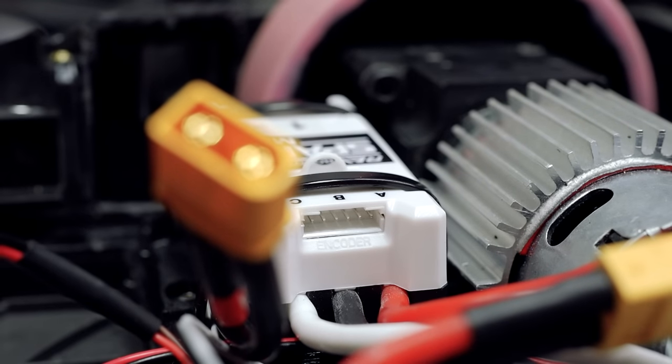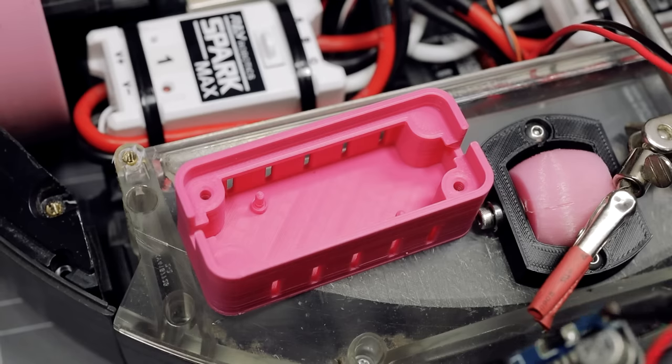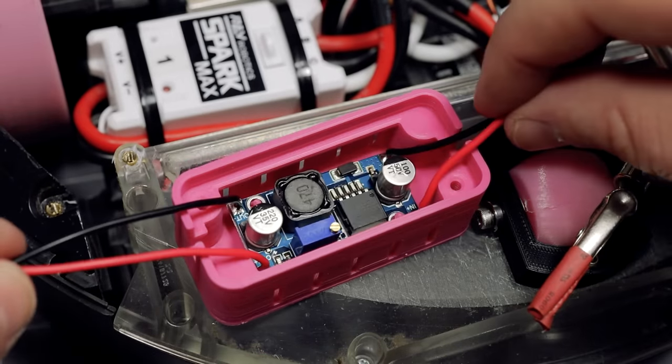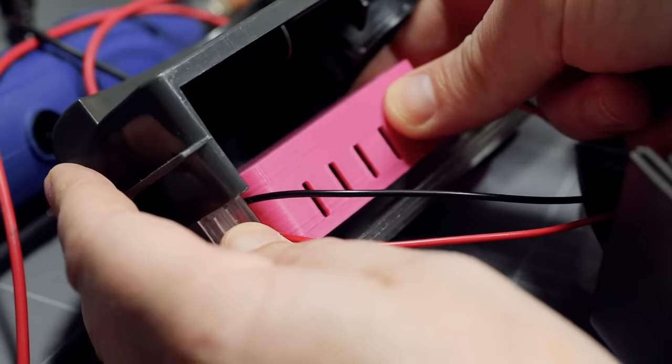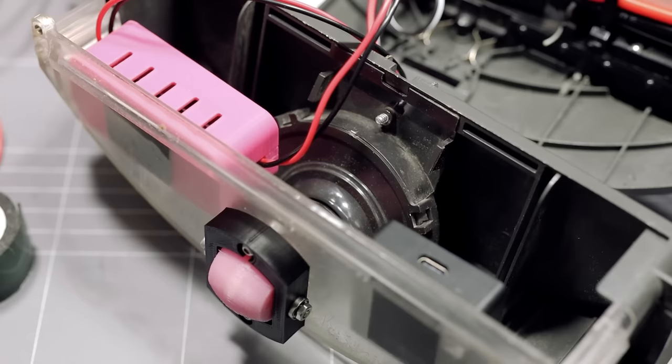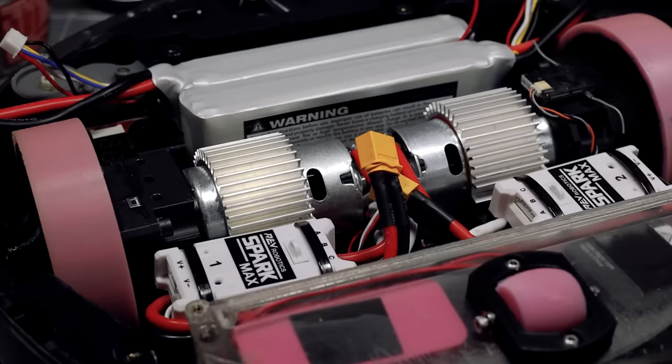I eventually attributed the problem to the onboard 5 volt supply from the motor controllers. So I decided to power the receiver with a step down voltage converter instead which I tucked away in the back. And now there is literally no more available space on the chassis.